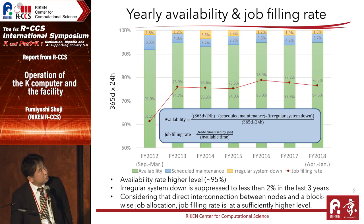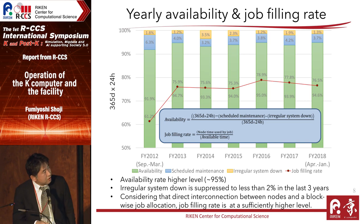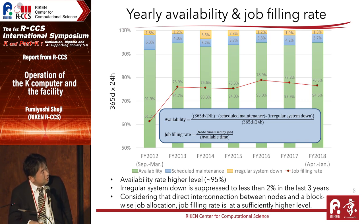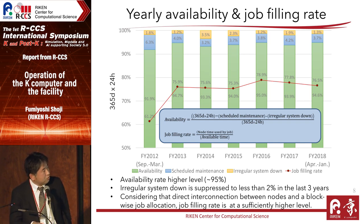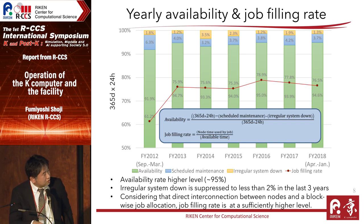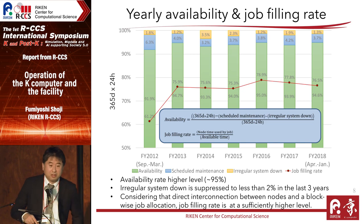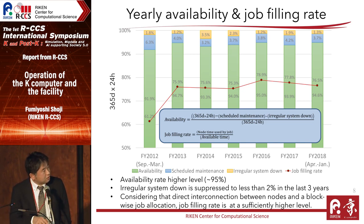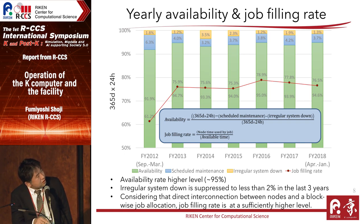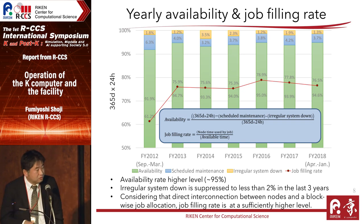This slide shows the yearly system availability and job filling rates. Green bars show the system availability. Availability rate is defined in the way shown here, and it is high — about 95 percent. Orange bars show irregular system downtime, which is very small. Especially for the last three years, we have kept system downtime suppressed to less than two percent. The red line shows the job filling rates, which are between 75 and 80 percent.